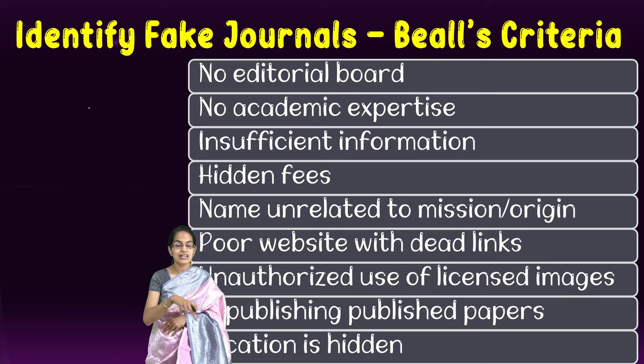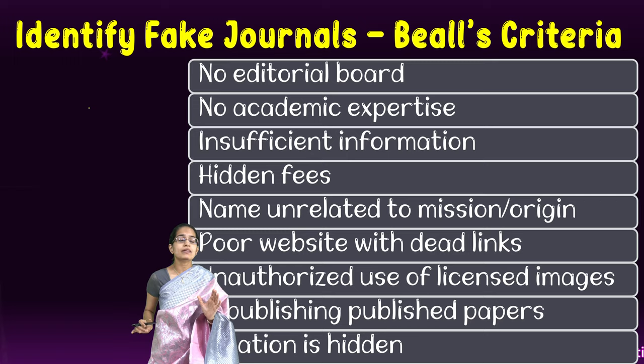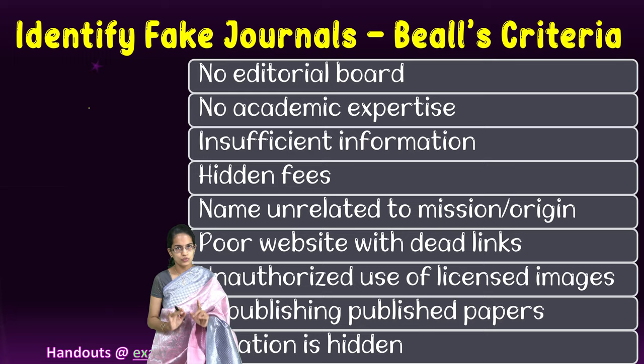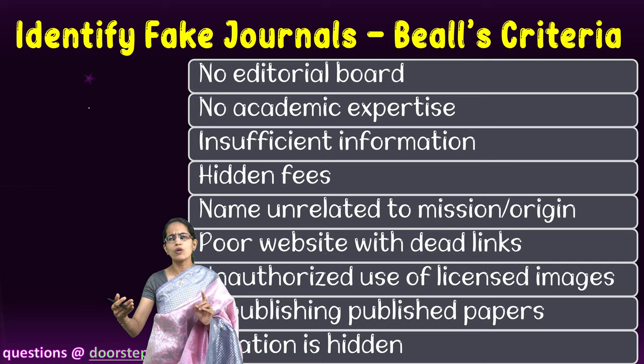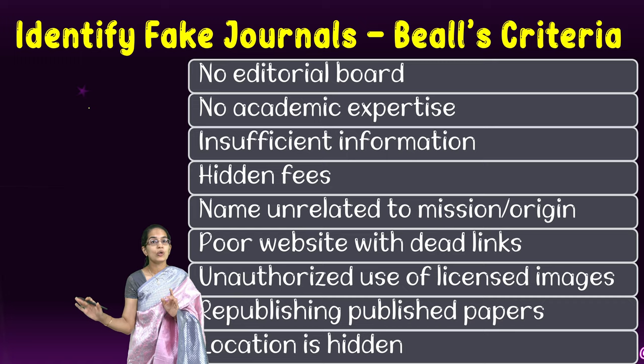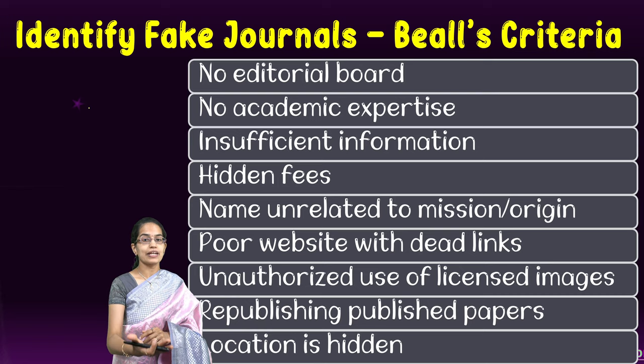Journals usually have their whole identity disclosed — the contact person, telephone number, email ID, and location are all mentioned. But with a predatory journal, the location would be hidden. Go through the website very, very carefully before spending your energy sending articles for publication.